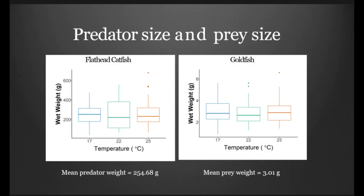We know that predator size and prey size are both going to be influential on gastric evacuation rates. This is just showing my three treatments on the bottom here: 17, 22, and 25, and then the wet weights of the individuals for both the flathead catfish and the goldfish. We found that there wasn't actually any difference between our treatments as far as these weights. The mean predator weight was actually 255 grams, and the mean prey weight was around 3 grams.